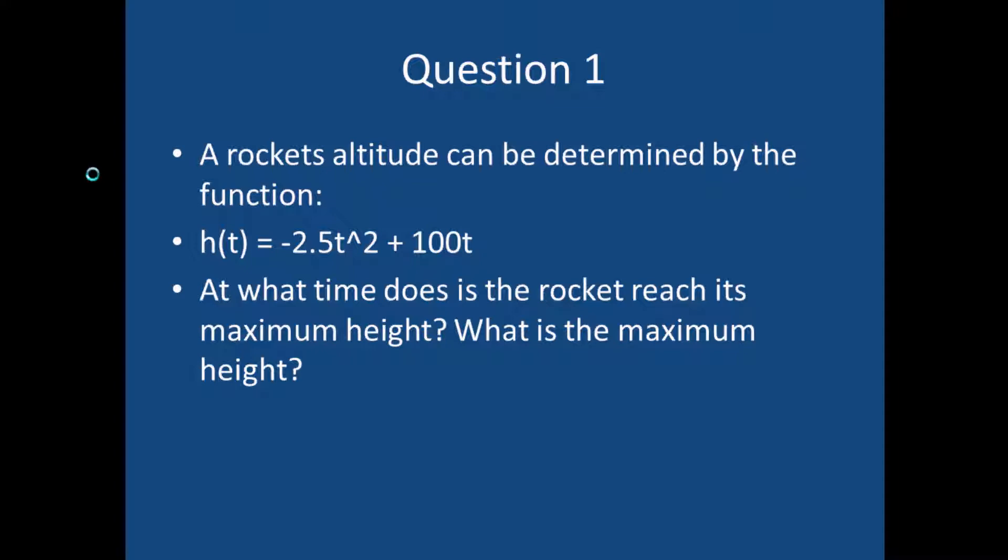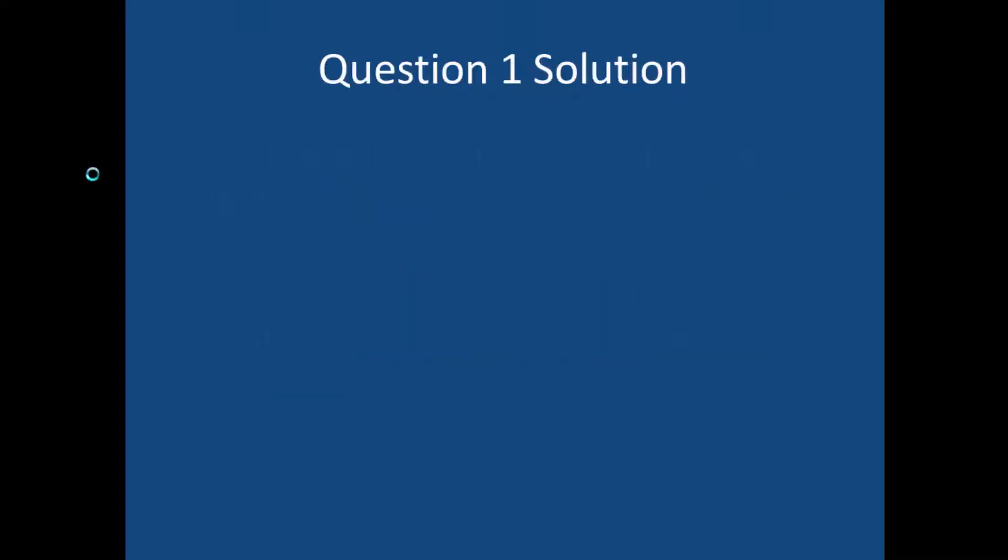Okay, so question one says, a rocket's altitude, so I missed an apostrophe there, whoops. Anyway, a rocket's altitude can be determined by the function h of t equals minus 2.5 t squared plus 100 t. At what time does the rocket reach its maximum height, and what is the maximum height? Alright, so why don't you go ahead and pause it in 3, 2, 1, mark.